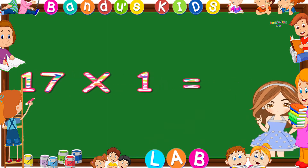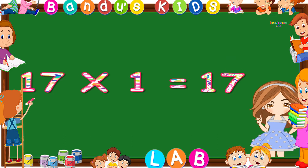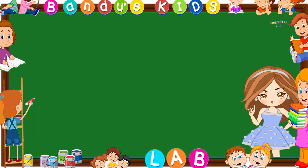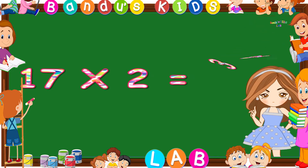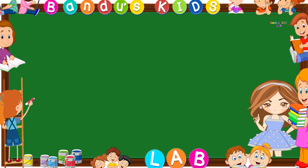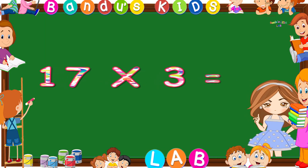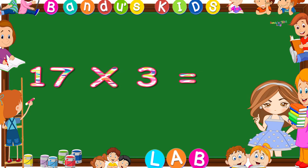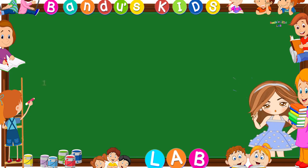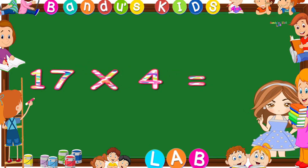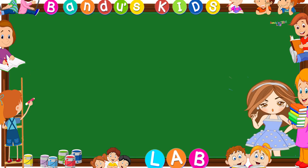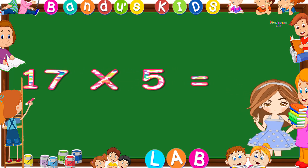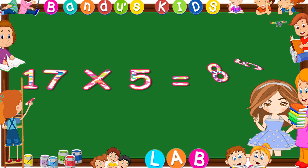17 1s are 17. 17 2s are 34. 17 3s are 51. 17 4s are 68. 17 5s are 85.